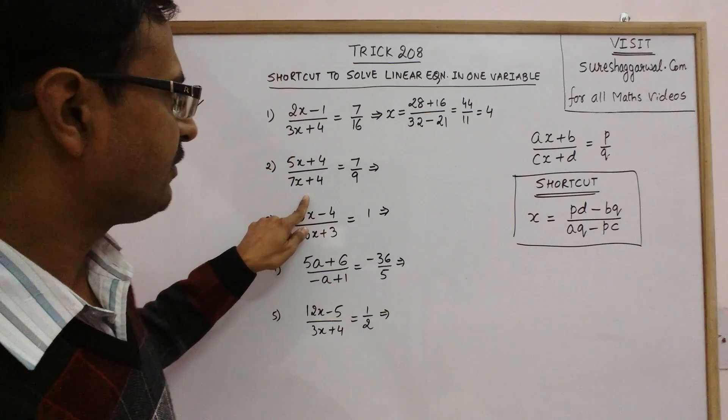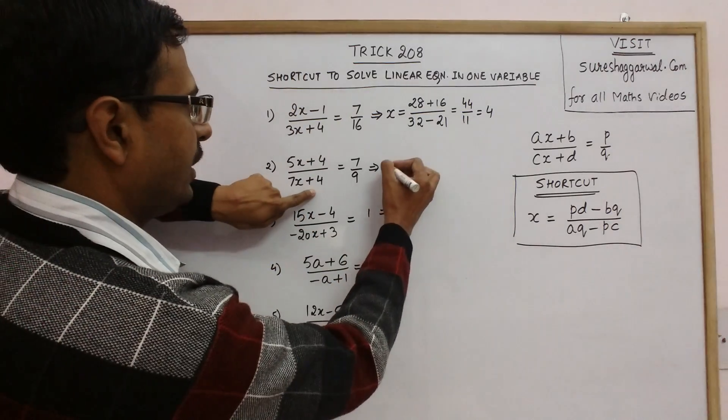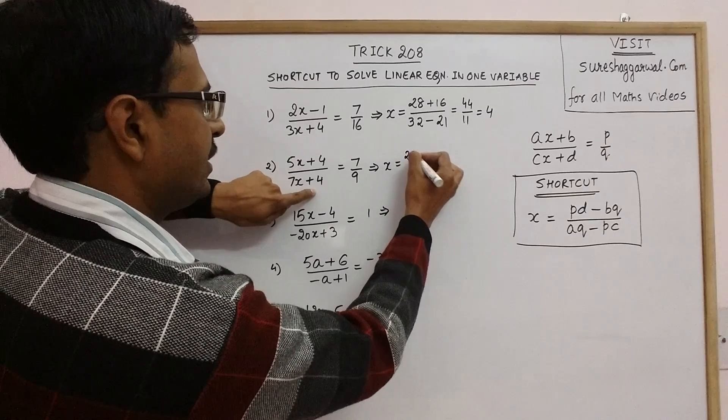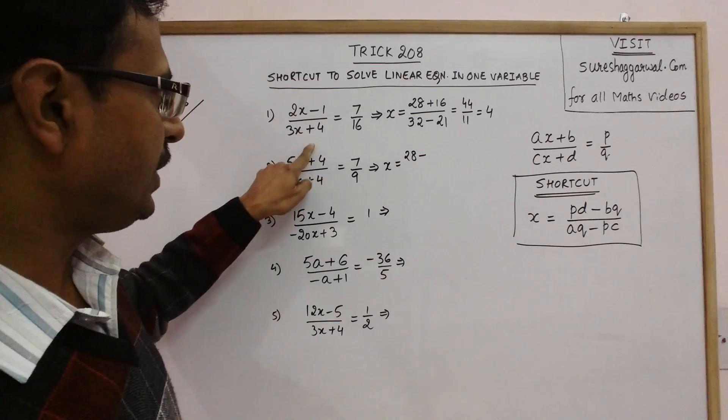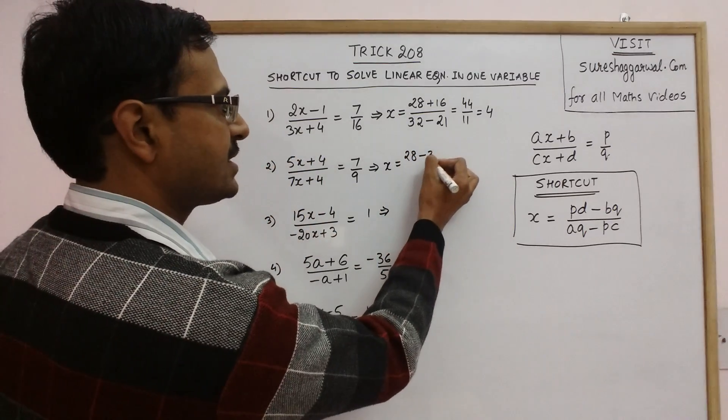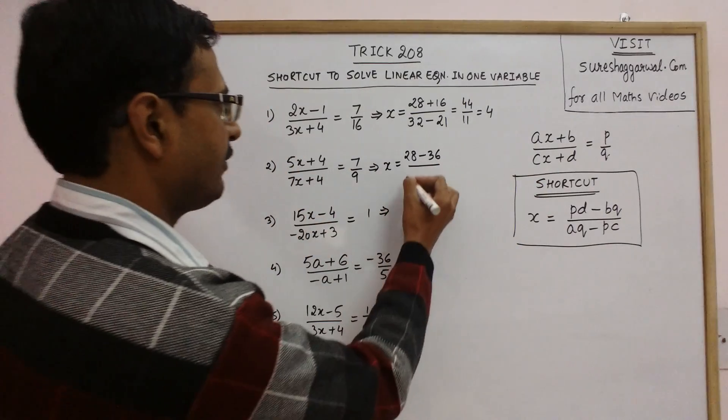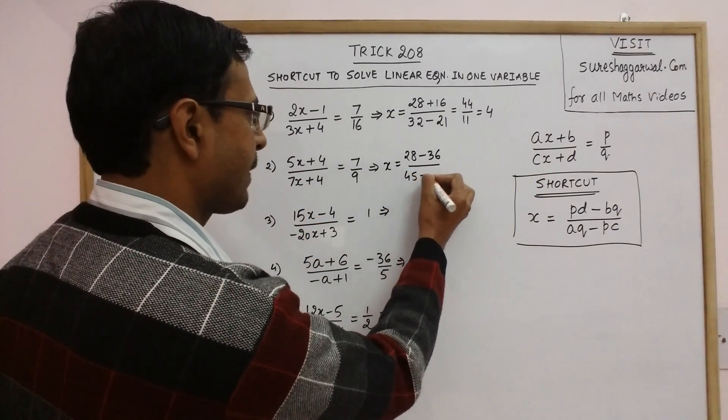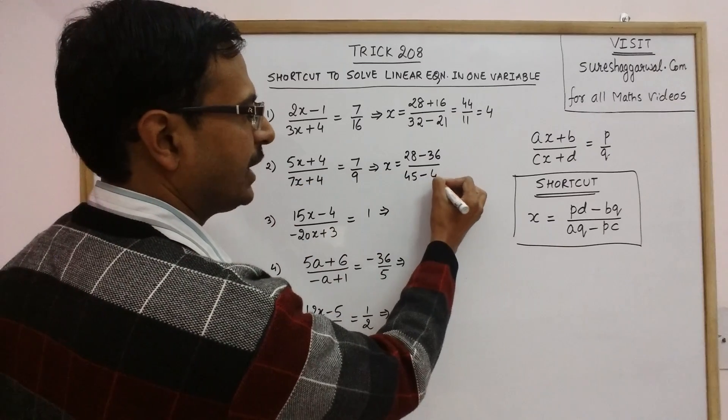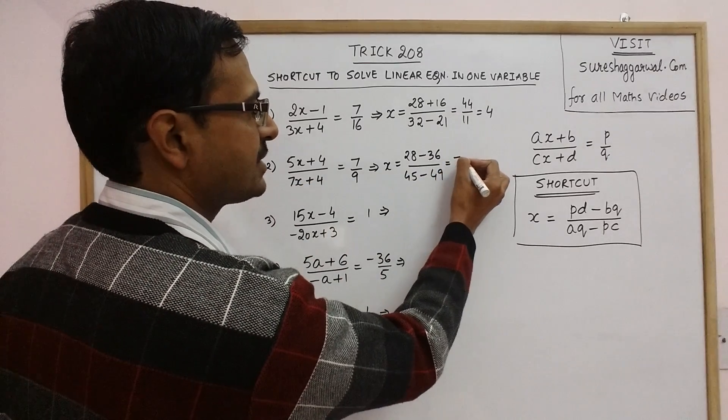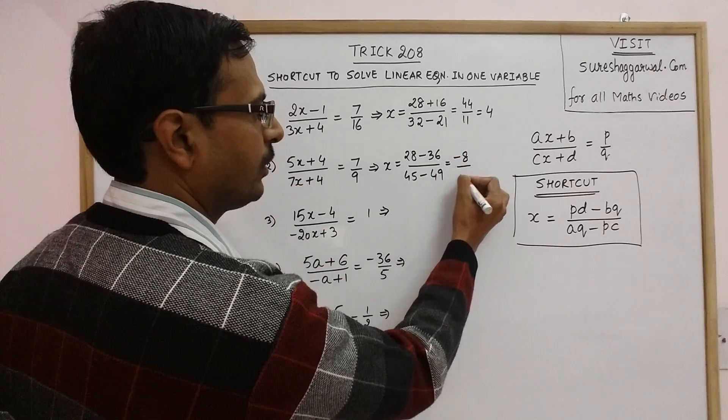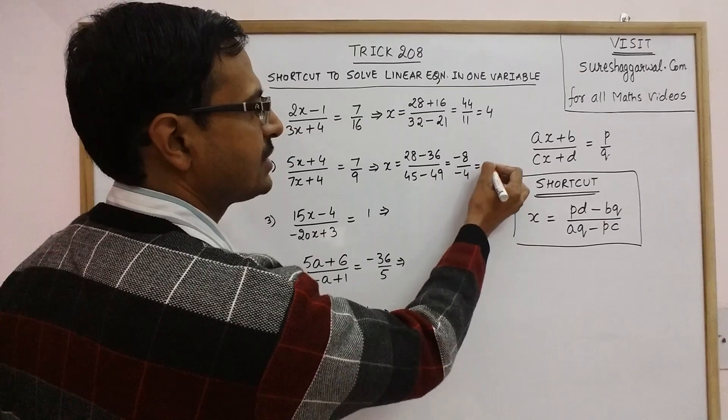Now apply this here. See we have pd 28 minus bq 36 upon aq 45 minus 7 into 7 is 49. So this is minus 8 upon minus 4. Your answer is 2.